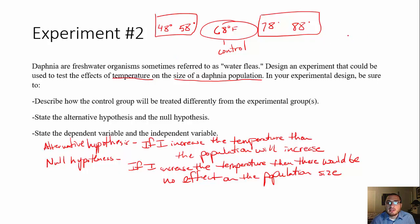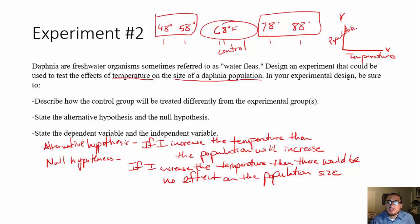Once I collect my data, I'm going to set up my x-axis and y-axis. My independent variable is going to be the temperatures, because I know those before I even start — I decided on 48, 58, 68, 78, and 88 degrees. What I don't know is the effect it's going to have on the population. So population size is going to be my dependent variable on the y-axis. Keep these things in mind.